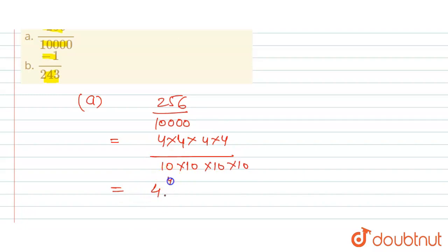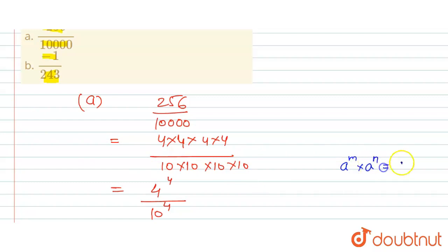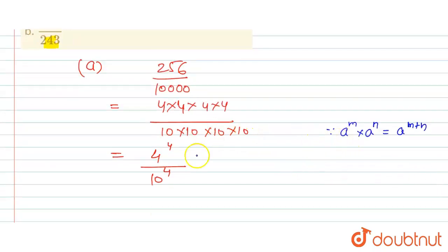This becomes 4 raised to 4 upon 10 raised to 4. According to the law of exponents, a raised to m multiplied by a raised to n equals a raised to m plus n. So this is the exponential form of part A.